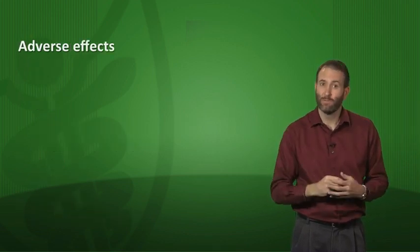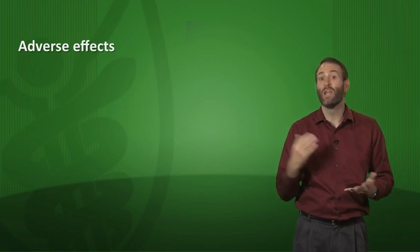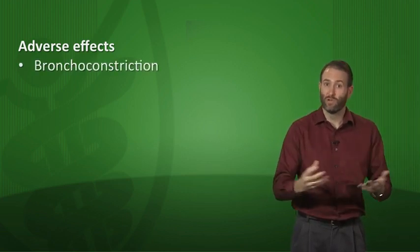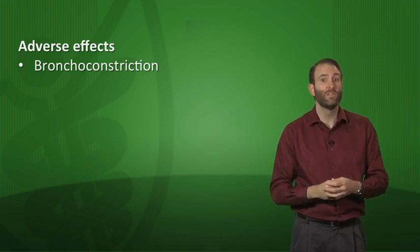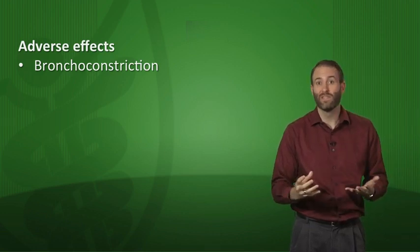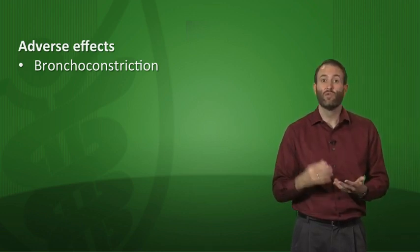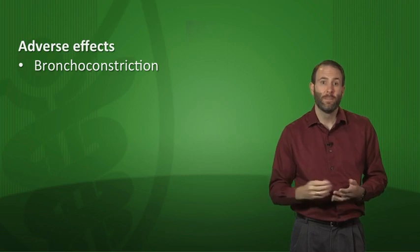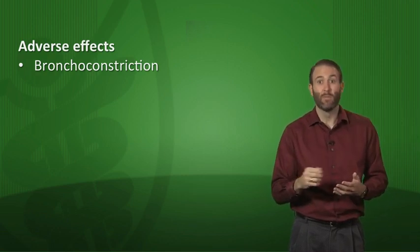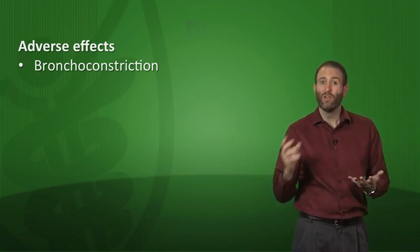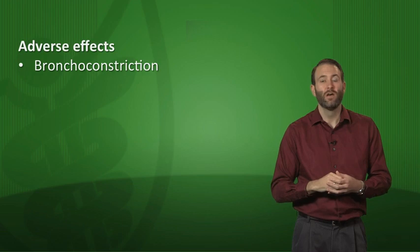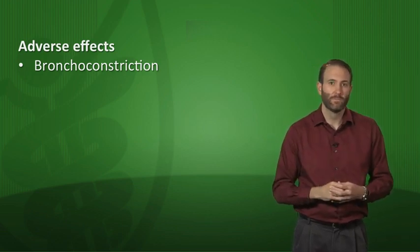What are the effects of blocking beta-2 receptors? If you're using a non-selective beta blocker, you're blocking beta-2, which can lead to bronchoconstriction. You definitely want to avoid these beta blockers in patients with asthma and COPD. The selective beta-1 blockers are better, but you still need to be a little careful when using those drugs in this population as well.